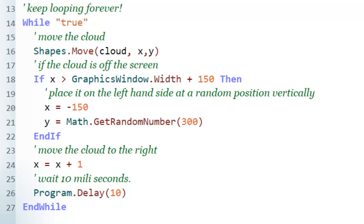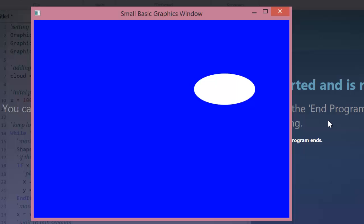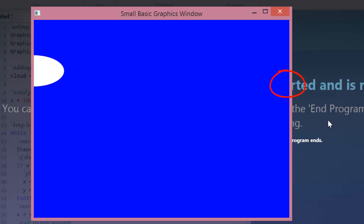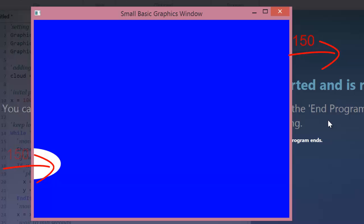When you run this program, what you see, and hopefully this will make more sense now, is when a cloud moves off to the edge, notice that it moves all the way off first. That's where the 150 comes into it. Then it picks a random number to draw the cloud again in the Y axis. So every time the cloud wraps around, it comes in at a different position.